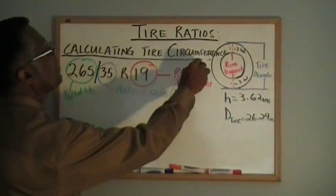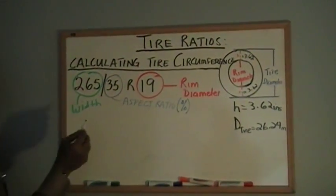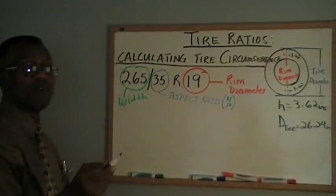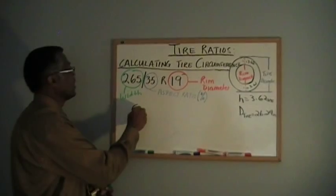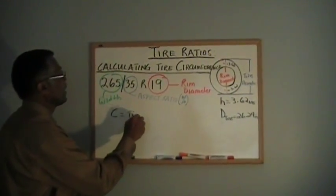If you look up here and see, calculate tire circumference. To do that, if you recall, the formula for circumference is C equals π times D.